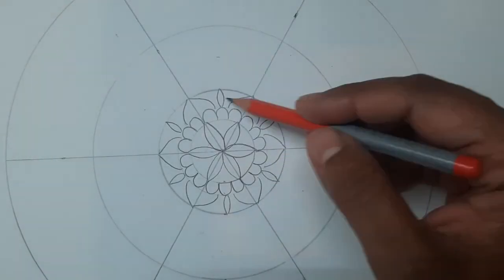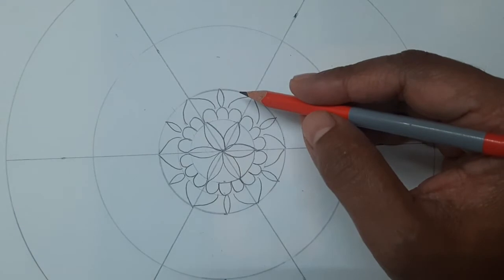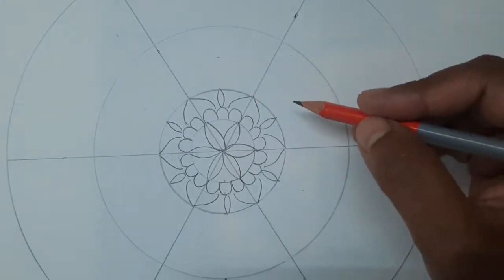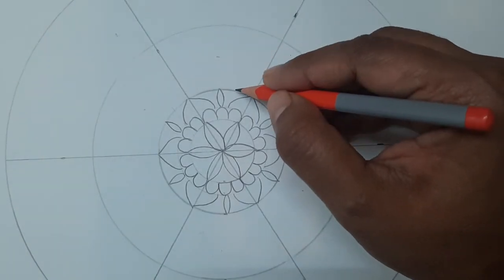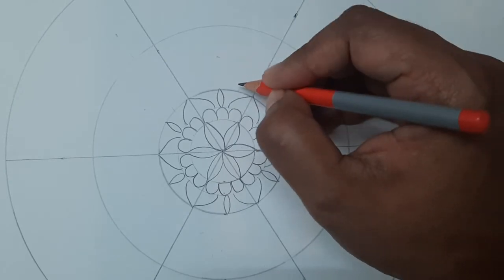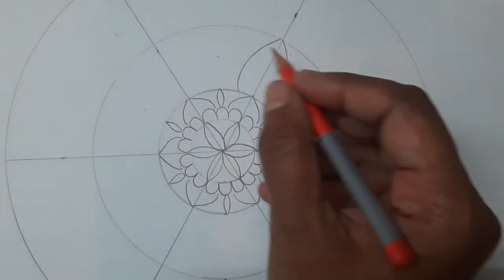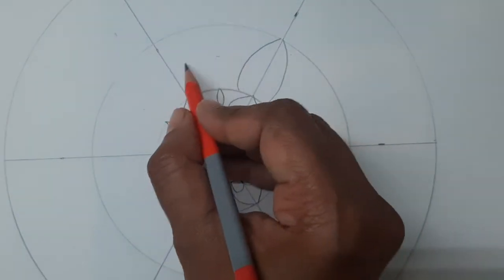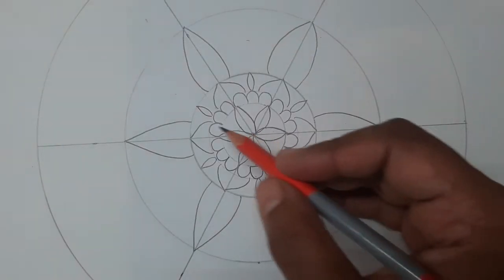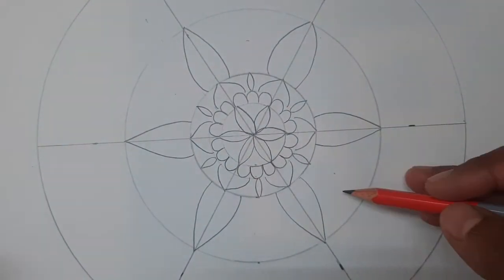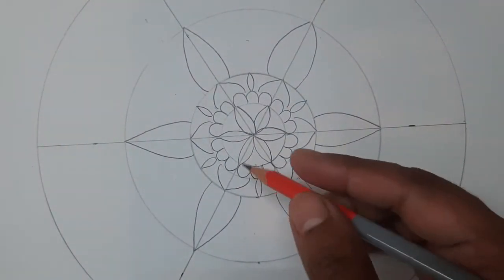Once you finish, this is how it looks. Now let us focus on the next circle. What I'm doing here is to draw a sharp petal. First complete the six sharp petals, and then I'll tell you what to do in between any two. Once you complete the sharp petals it looks like this.